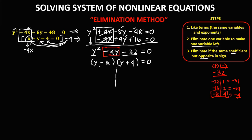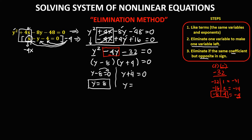To solve for y, equate each factor to zero. So y minus 8 equals 0 gives y equals positive 8, and y plus 4 equals 0 gives y equals negative 4. These are the two values for y.